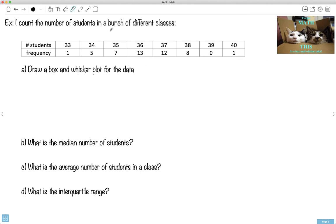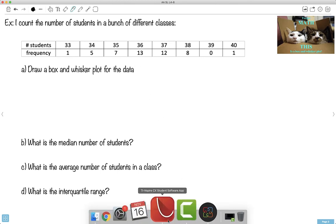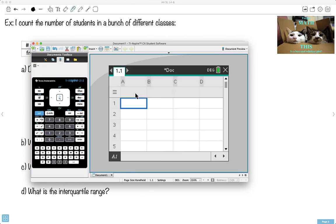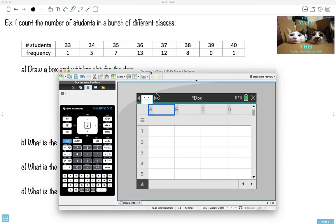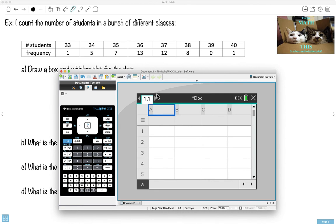So I'm counting the number of students in a bunch of different classes. These would be huge numbers of classes. But maybe in your school you have so many. So this is number of students in a class, and this is the number of different times that happens. So there's one class with 33 kids in it. There's five of them with 34. This must be a giant school. But draw a box and whisker plot for the data. Well, I've got to put all this information into my calculator. So first, I'm going to go to lists, and I'm going to make a spreadsheet. So maybe I'll say students. And the next one, I think I'll call it frequency.